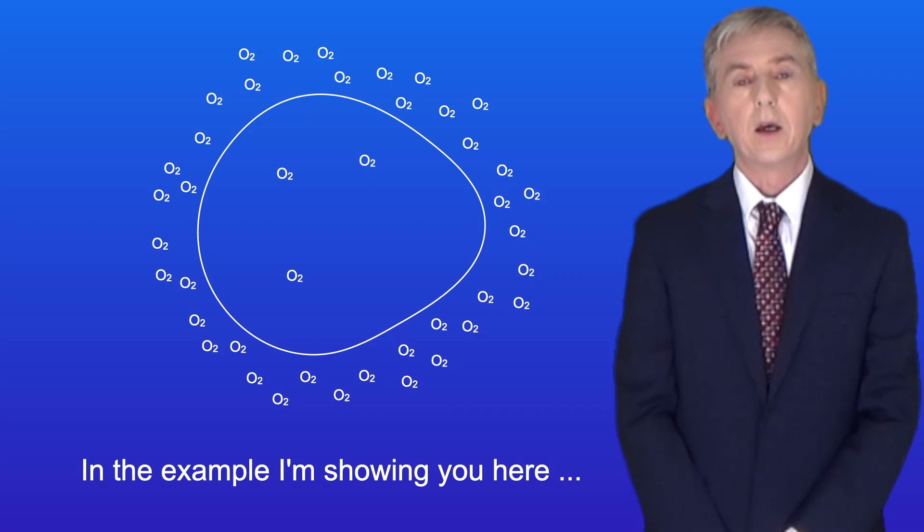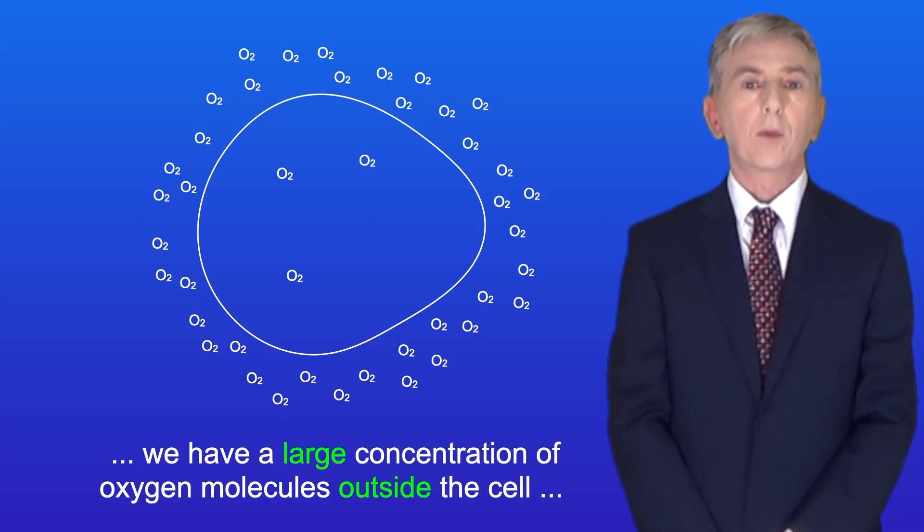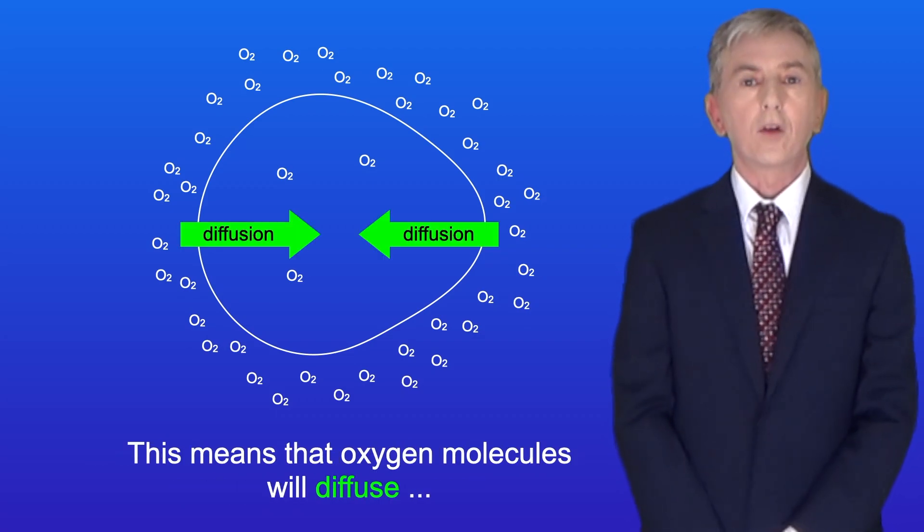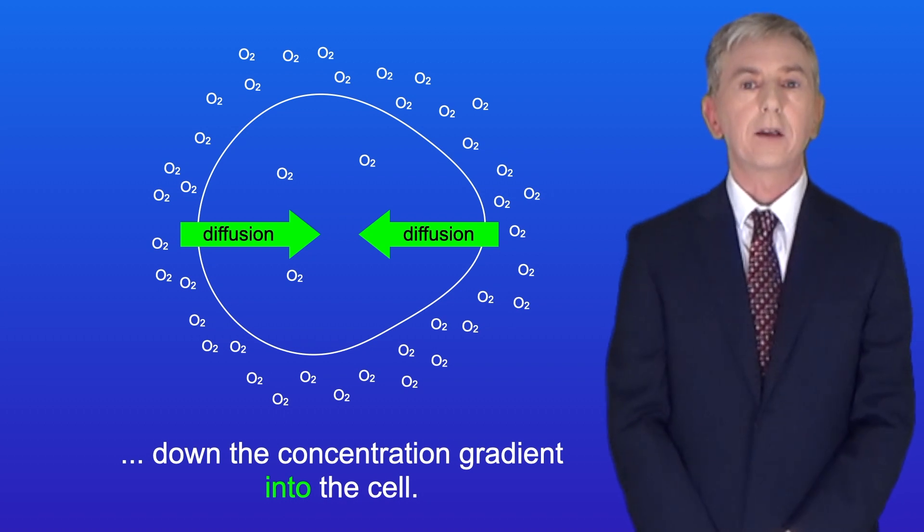So in the example I'm showing you here, we've got a large concentration of oxygen molecules outside the cell and a lower concentration of oxygen molecules inside the cell. This means that oxygen molecules will diffuse down the concentration gradient into the cell.